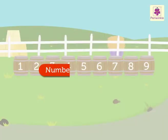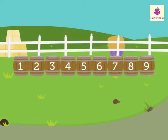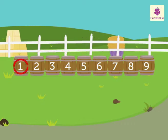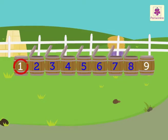What do you mean by a number smaller than? As we count backward, the number value decreases. 1 is less than 2, 3, 4, 5, 6, 7, 8, and 9.